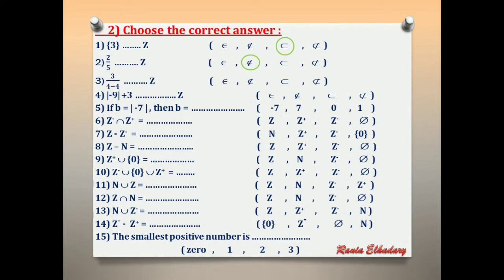Number 3: 3 over (4−4). 4 minus 4 equals 0. So we have 3 over 0, which is undefined or meaningless. So it doesn't exist — choose 'not belong.'